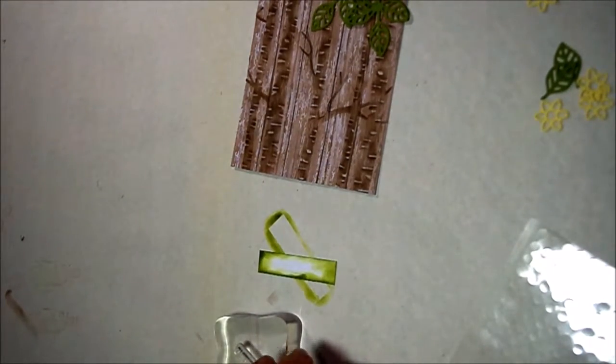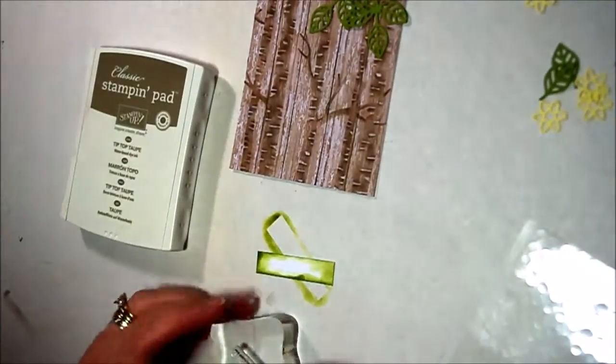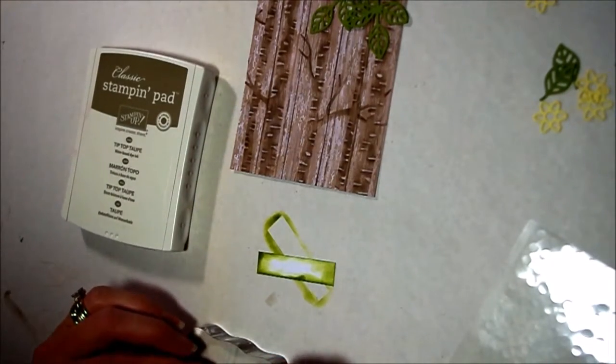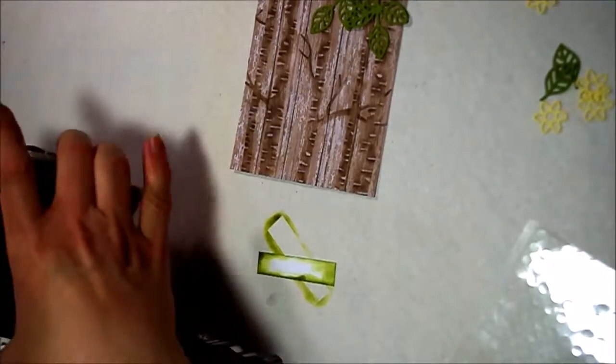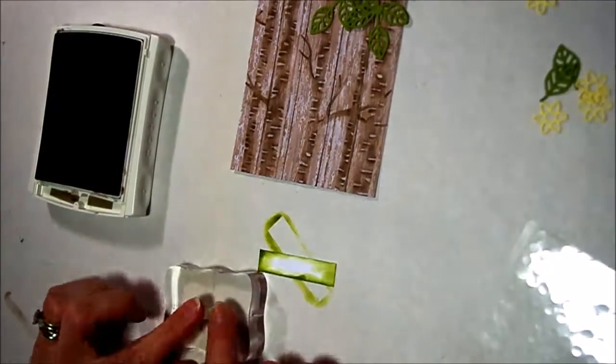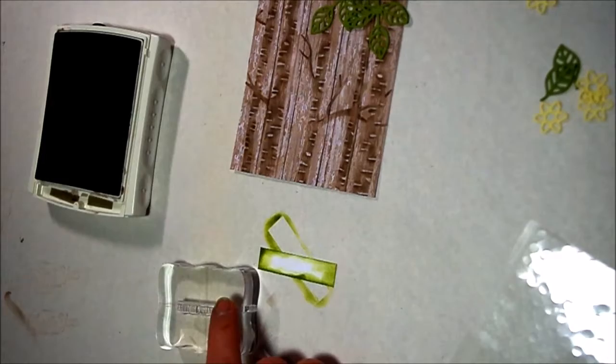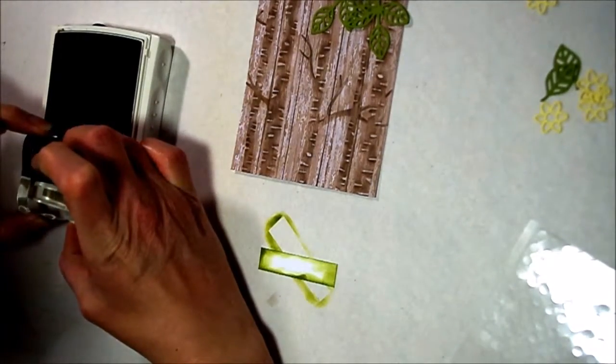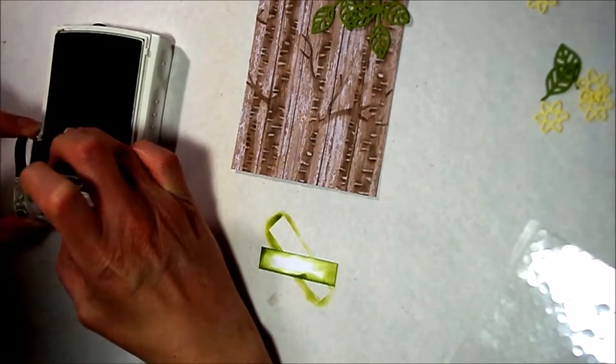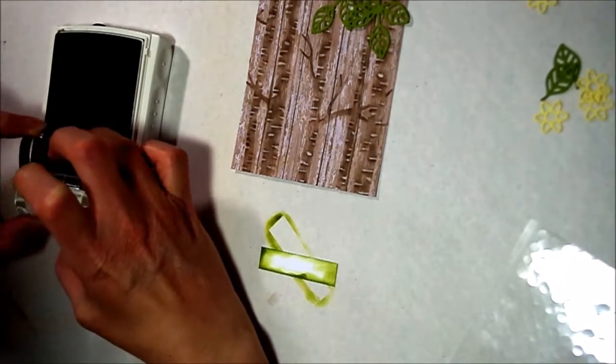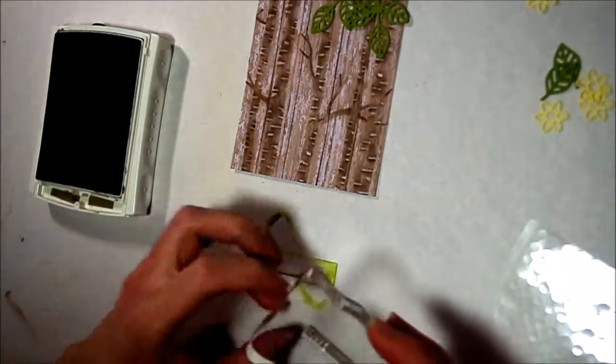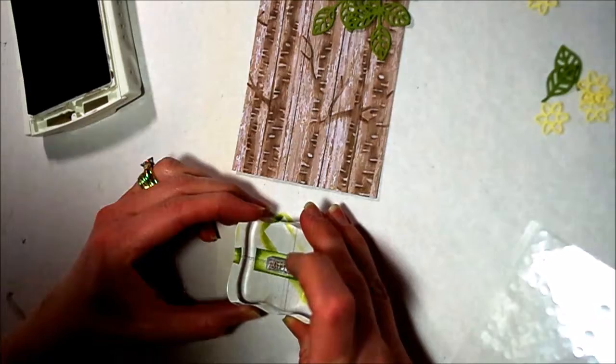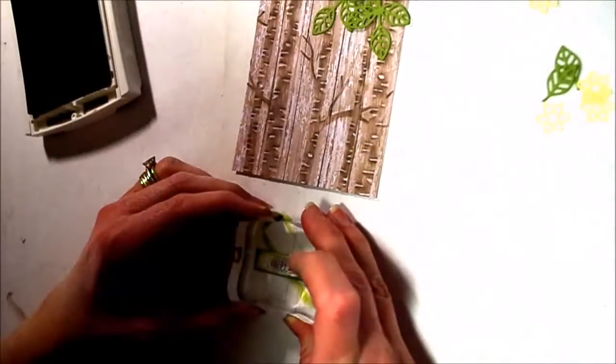And then I used the Tip Top Taupe, which is the color that we used on the bark of the trees. And usually with a photopolymer, I would grab my Stampin' Piercing mat, but my Tip Top Taupe is kind of like really juicy. So when I did it on the Stampin' Piercing mat, it kind of made it like bleed, and I didn't like the way it looked. So I'm going to just do this one right here on the hard surface.